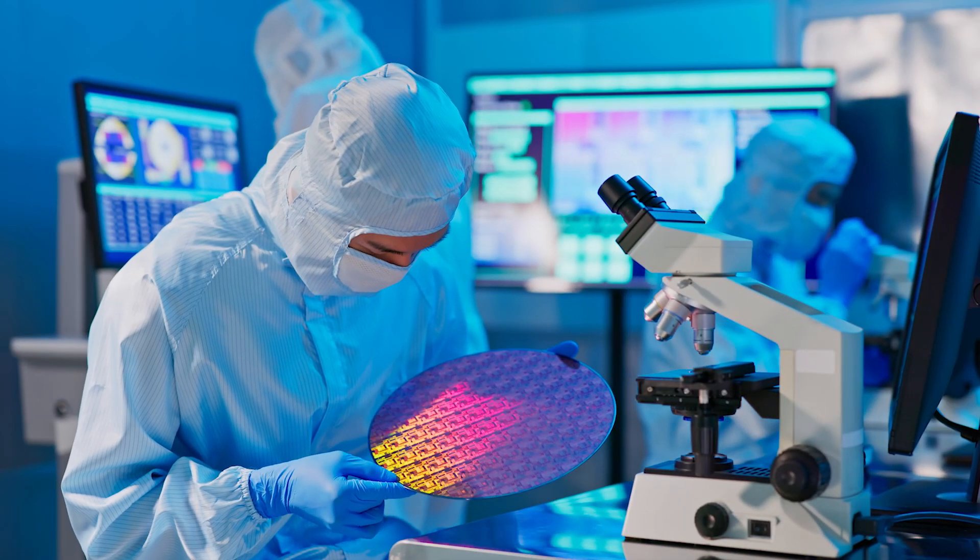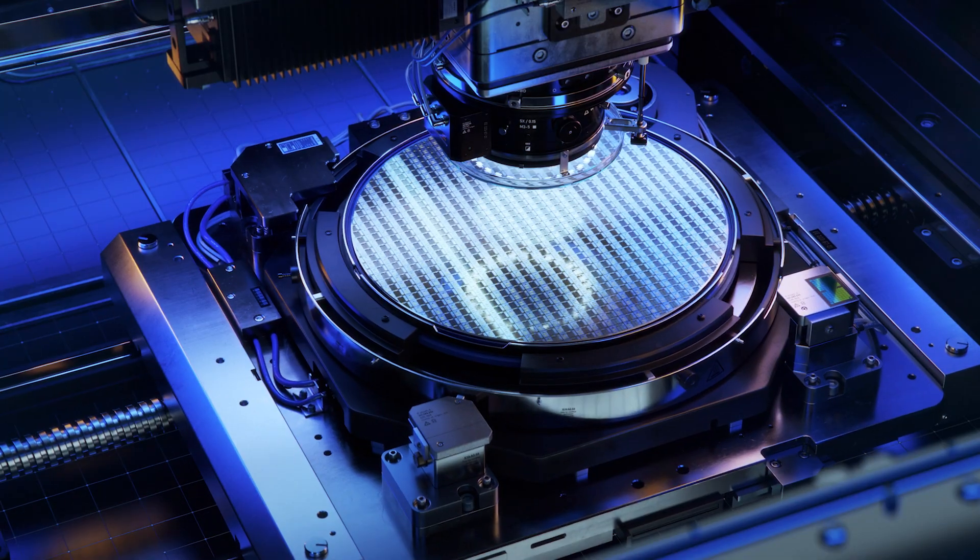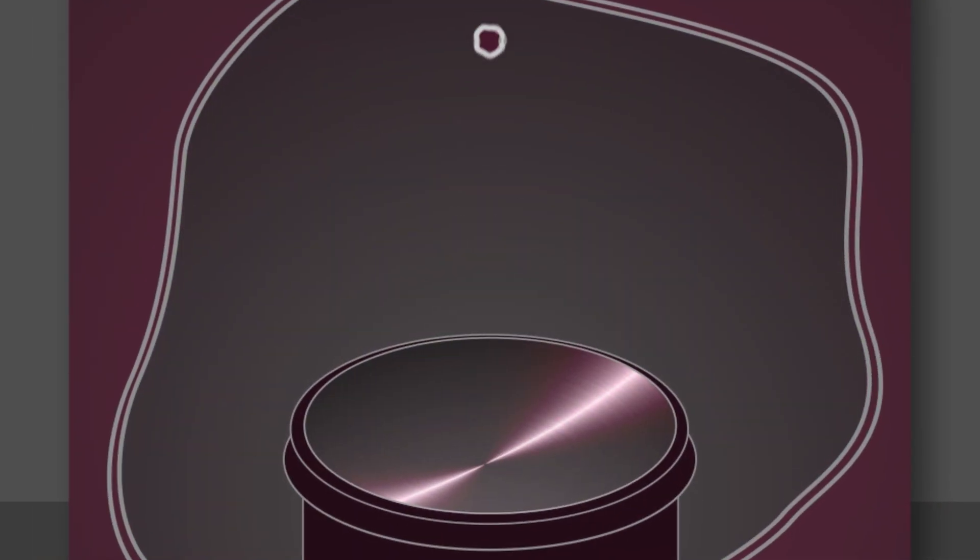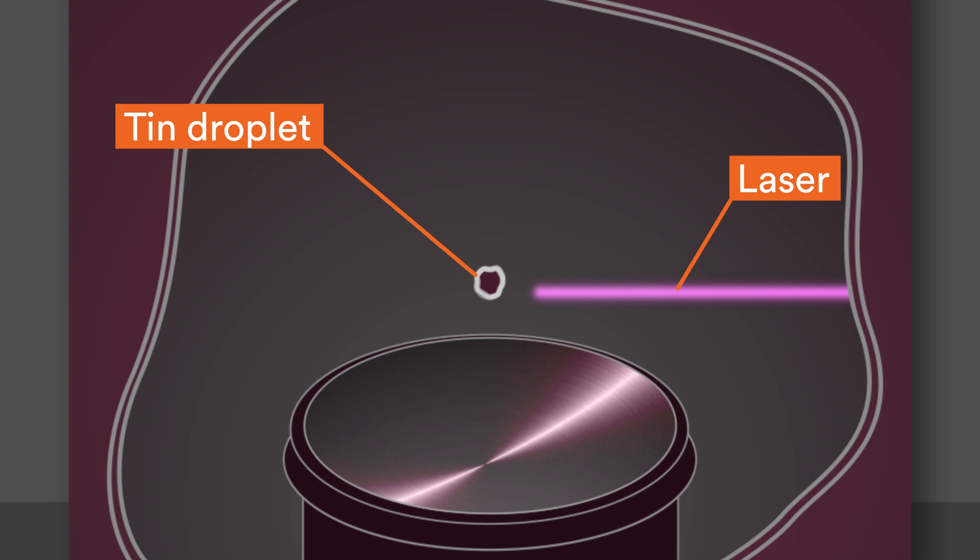To make this possible, manufacturers etch fine resolution structures onto chips in a process that involves shooting lasers at microscopic droplets of tin.